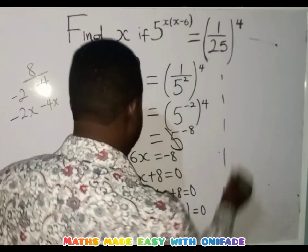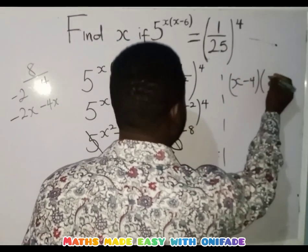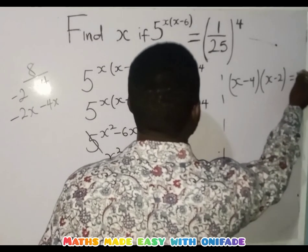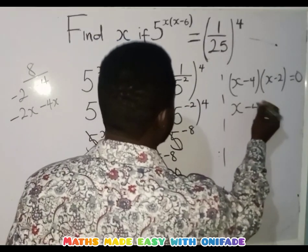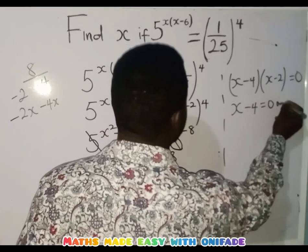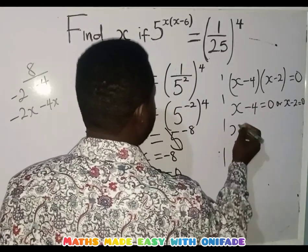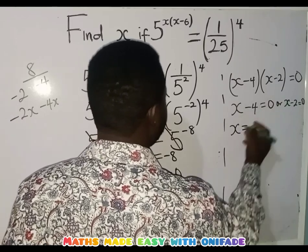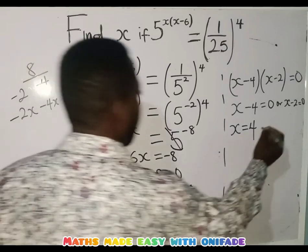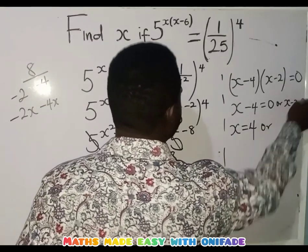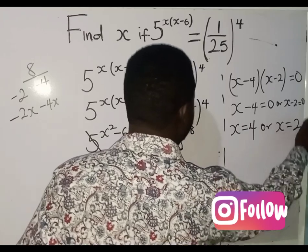So I can proceed by writing x minus 4 times x minus 2 equals to 0. Then in order to get our answer, I will have x minus 4 equals to 0 or x minus 2 equals to 0. So x equals to 0 plus 4, which gives x equals to 4. Or x equals to 0 plus 2, which gives x equals to 2.